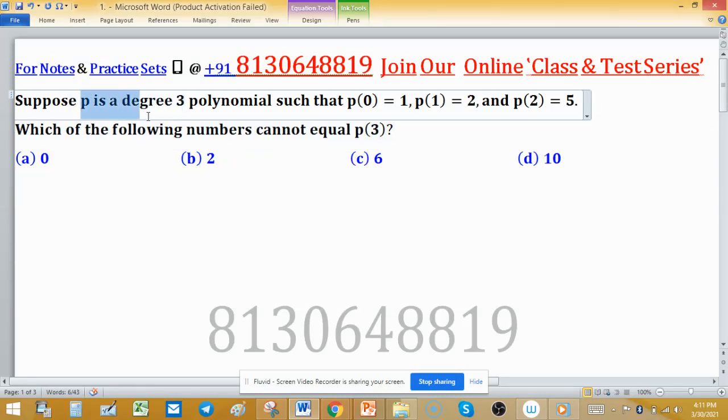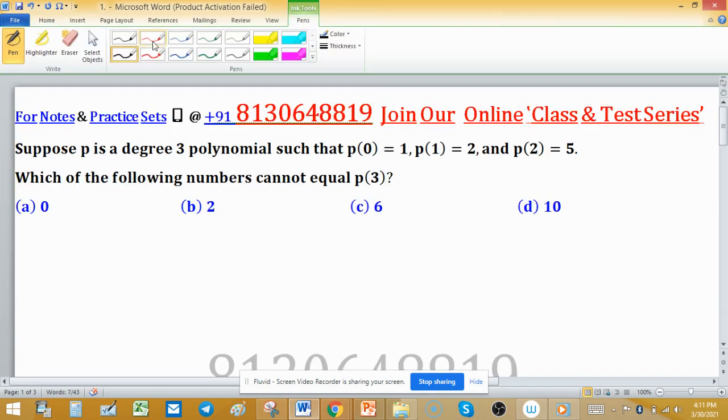Suppose P is a degree 3 polynomial such that P(0) is 1, P(1) is 2 and P(2) is 5. Which of the following numbers cannot equal P(3)? Means value of P(3) cannot be possible.